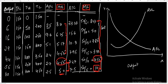Now the marginal cost curve also first falls and then rises. When the average variable cost is falling, the marginal cost curve is less than the average variable cost curve. Also, when the average variable cost is at its minimum, the marginal cost equals the average variable cost. This is the marginal cost curve.